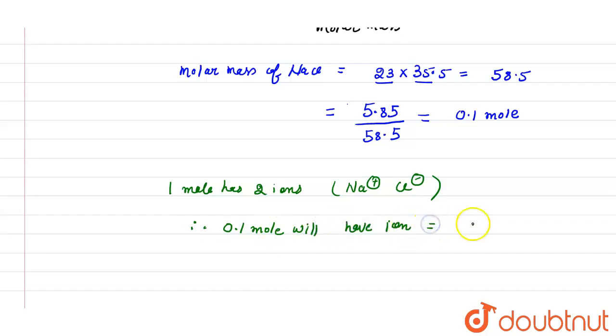Now, number of ions finally - number of ions present in 0.2 moles.